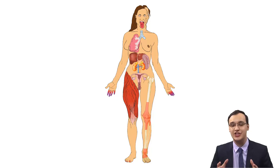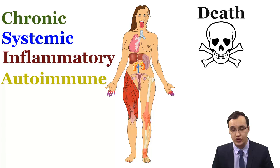Imagine yourself not being able to cry. This woman has these problems. She has a chronic systemic inflammatory autoimmune disease that can cause death if she gets a pulmonary infection, a lymphoma, or just renal failure.